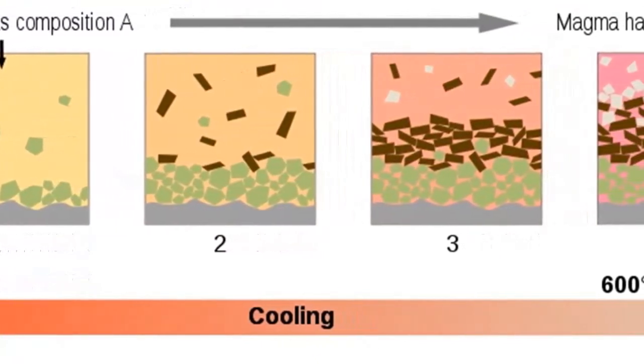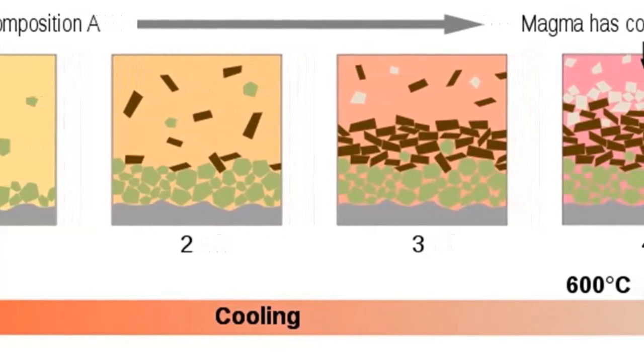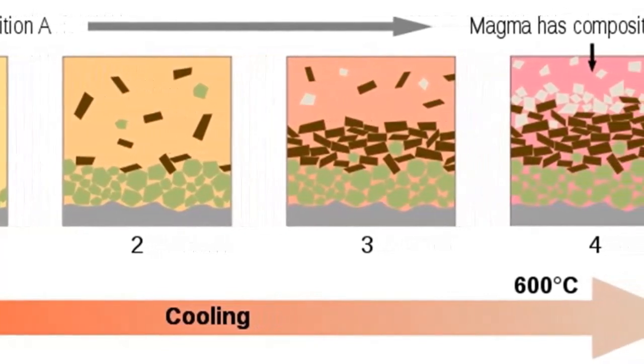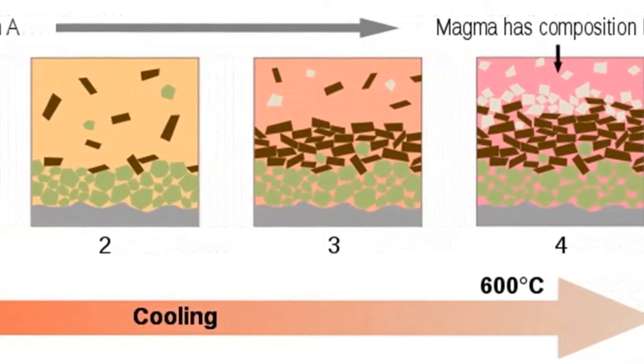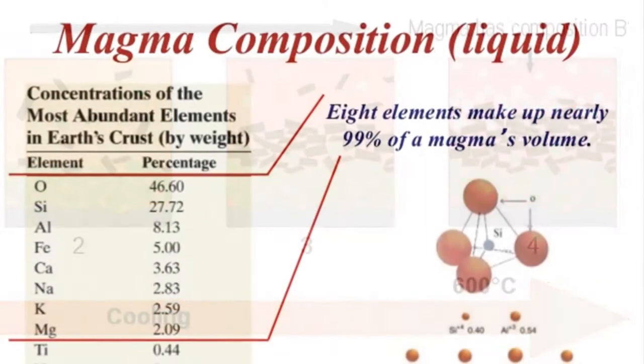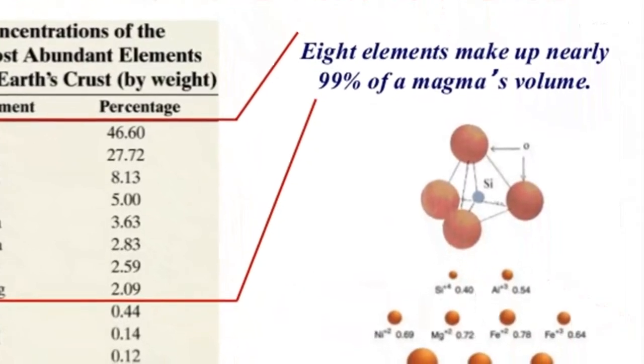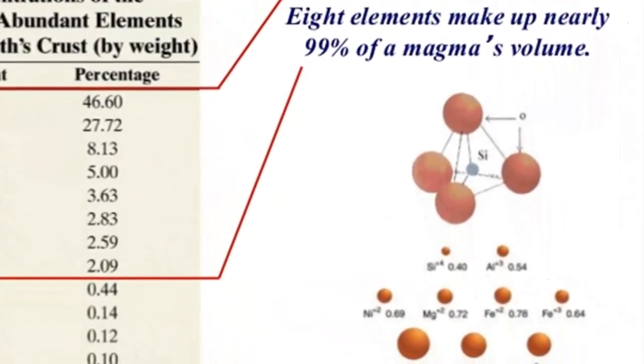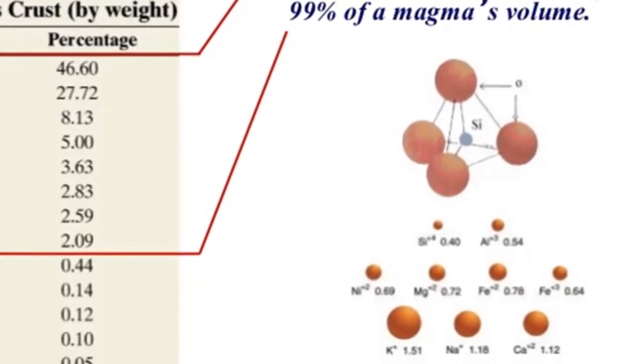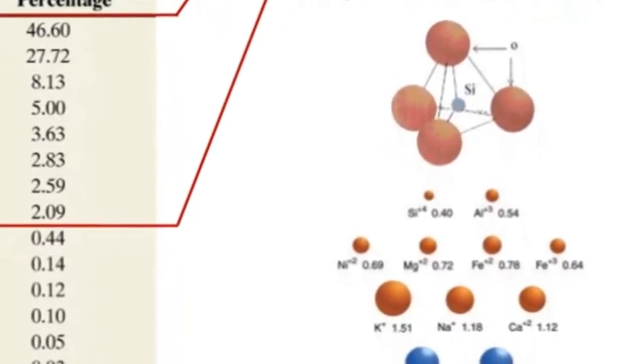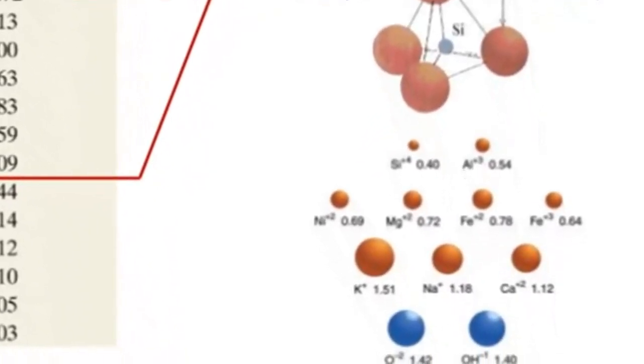The earliest formed minerals have space to grow and tend to have better developed crystal faces than do the later ones that fill the remaining space. Eventually, all of the melt is transformed into a solid mass of interlocking silicate minerals that we call an igneous rock.